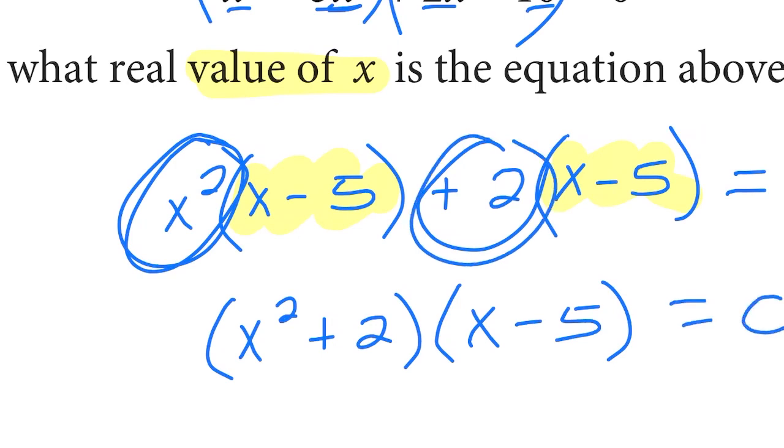Because if you think about it, the x squared distributes, and then so does the 2. So that's why it can be written like this, but it can be condensed to look like this version here.